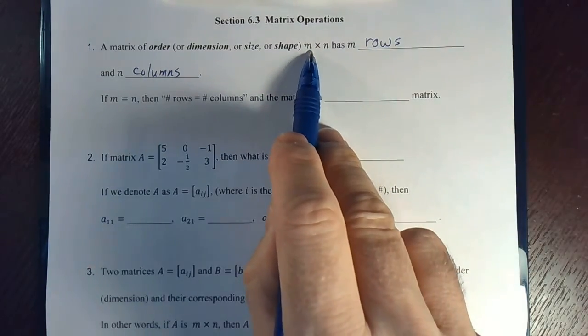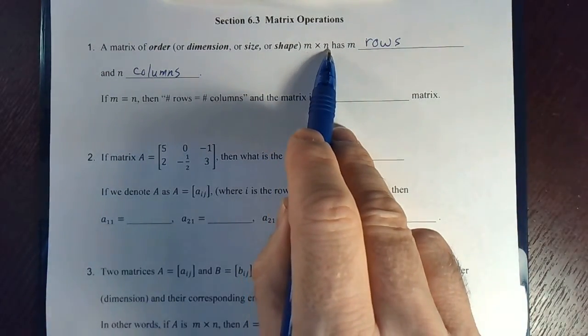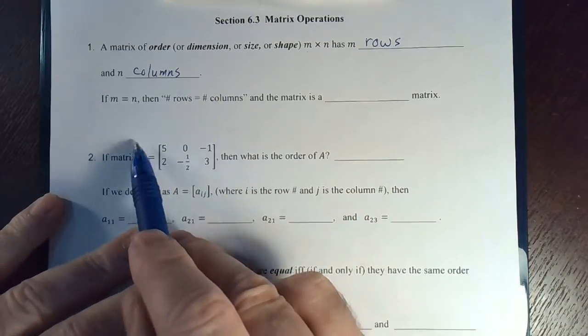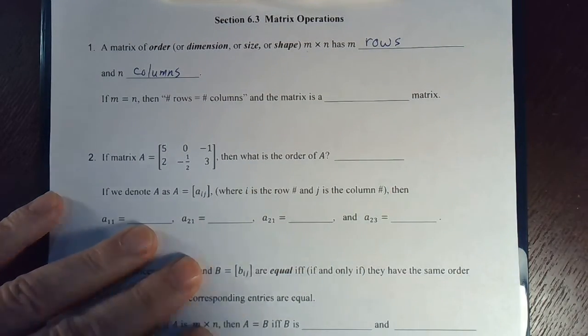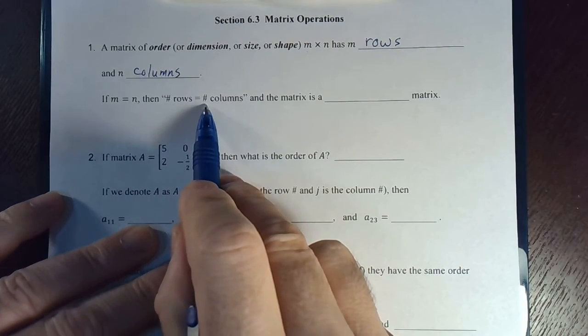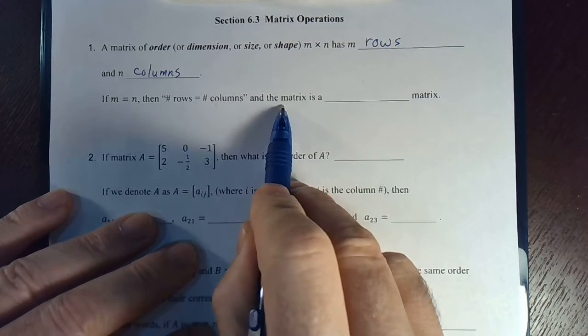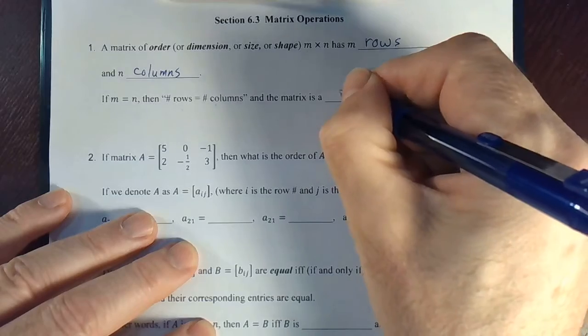So if you had two by three, there would be two rows by three columns. And if M and N happen to be equal, that means that the number of rows is equal to the number of columns. And we call that type of a matrix a square matrix.